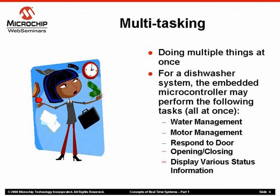Let's talk about multitasking. While zigzagging on a highway with a cup of coffee in one hand and a mobile phone in the other, we are multitasking. In this case, the central intelligent unit in our system — the brain — is managing multiple tasks of driving, drinking, talking, and potentially safely switching lanes all at once. Likewise, in the dishwasher system, the microcontroller may be concurrently managing a variety of tasks such as water manager, motor manager, door manager, display manager, etc. Each task individually thinks that it has the full attention of the microcontroller. However, in reality, the microcontroller is attending each one of them according to a predetermined scheme called the scheduler.